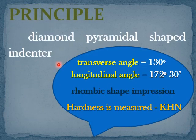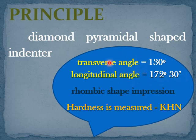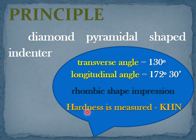The principle involved in Knoop hardness testing: a diamond pyramidal indenter is used whose transverse angle is 130 degrees and longitudinal angle is 172 degrees 30 minutes. When such an indenter is placed on the surface of the testing specimen and a known load is applied from the top surface, a rhombic-shaped impression is formed. The average diagonal length (d1 + d2) / 2 is measured from the optical microscope. Knowing the applied load and the average diagonal length d, the hardness is measured from the Knoop hardness number.